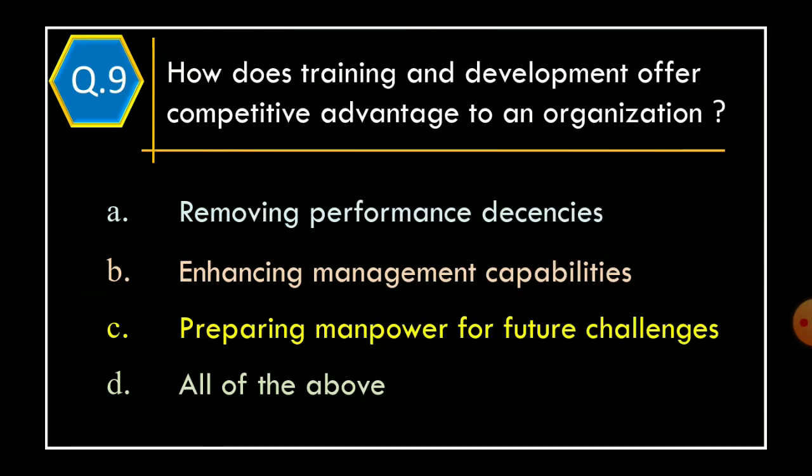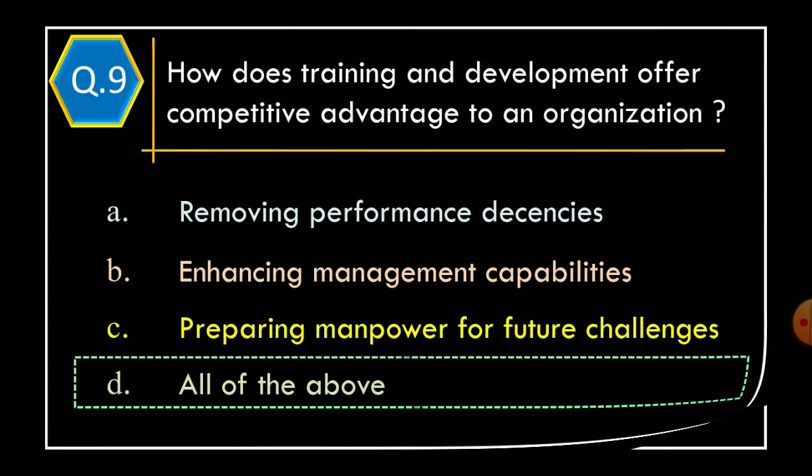Question 9. How does training and development offer competitive advantage to an organization? Option A: Removing performance deficiencies. Option B: Enhancing management capabilities. Option C: Preparing manpower for future challenges. Option D: All of the above. The correct option is Option D: All of the above.